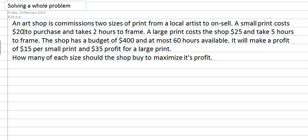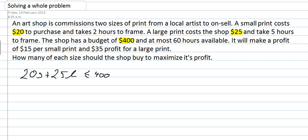We've got small prints that cost $20 and large prints that cost $25. I know I've got $400 to spend, so that's my first constraint: 20 lots of small plus 25 lots of large, and that's got to be less than or equal to $400, because they've only got $400 to spend.